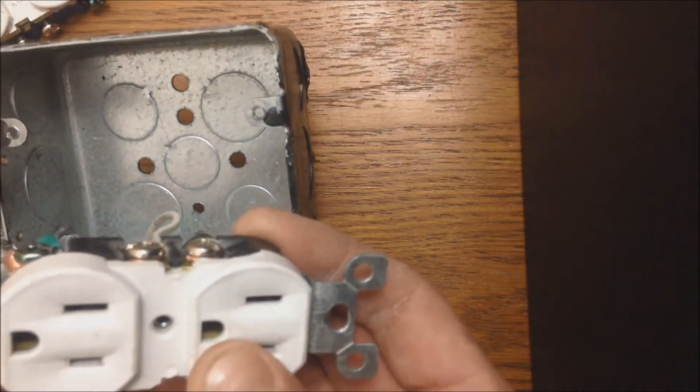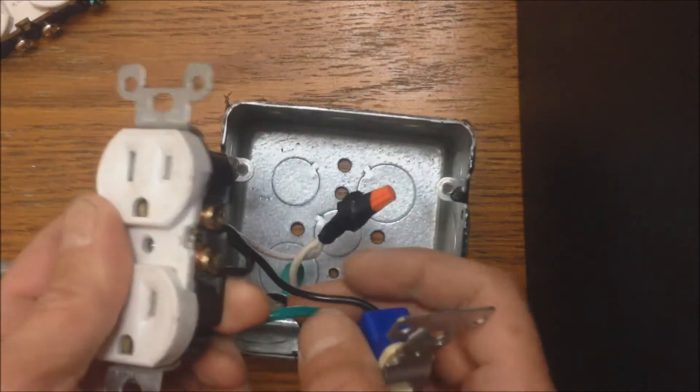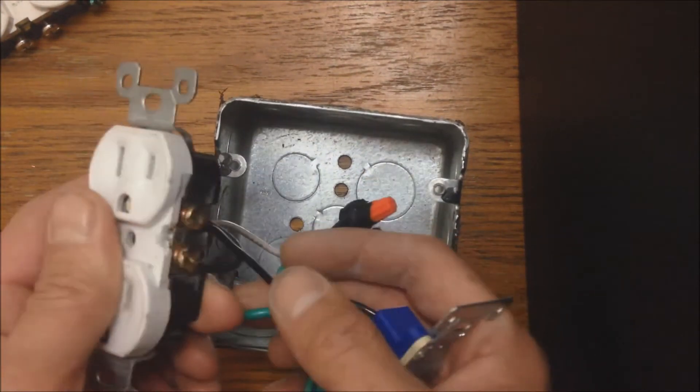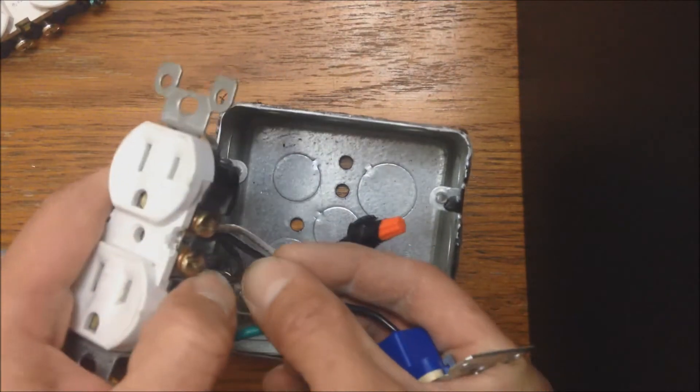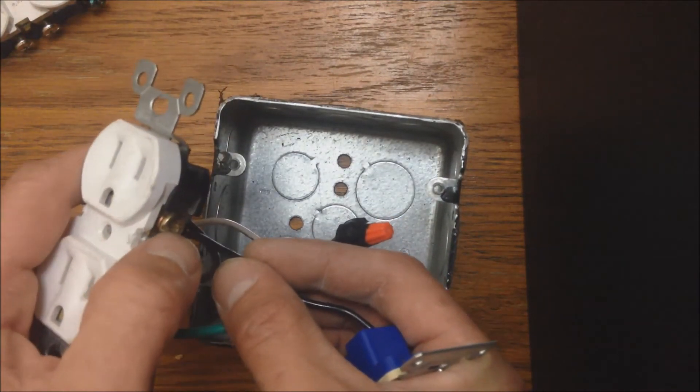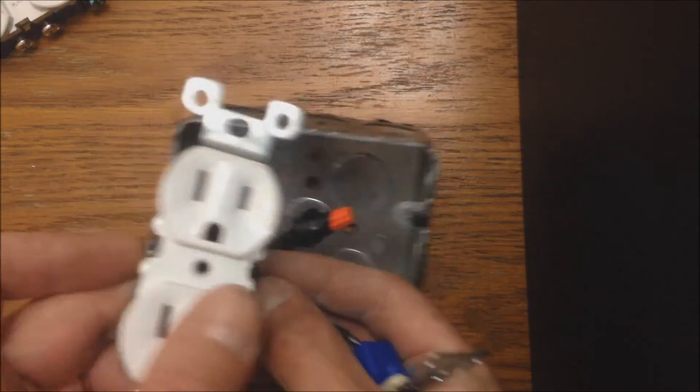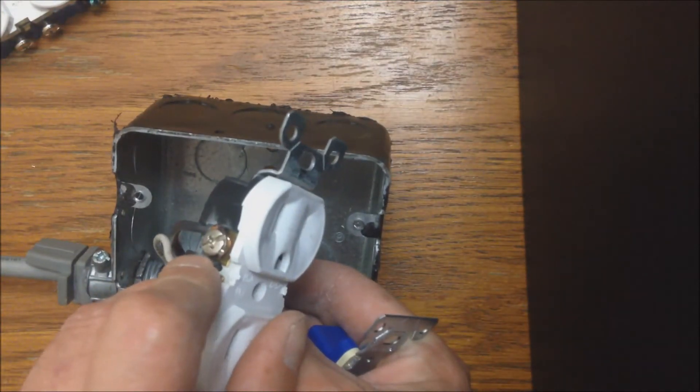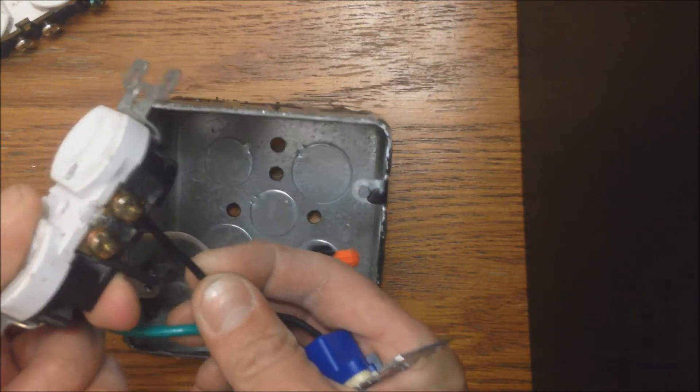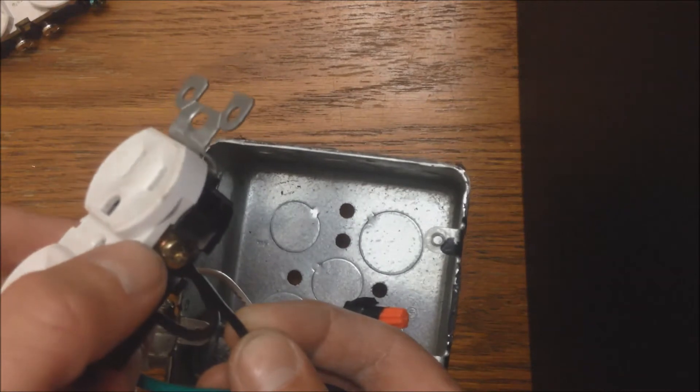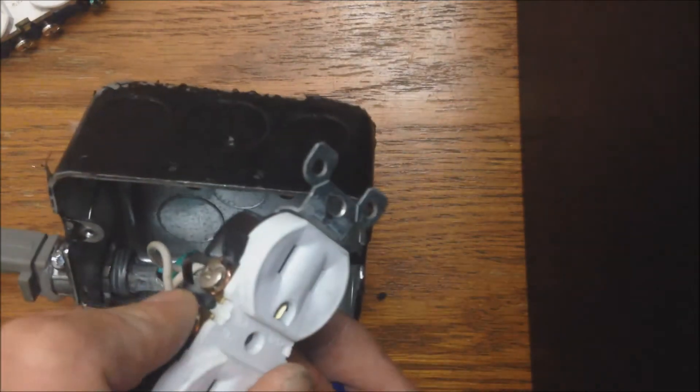We've separated the two and the way we have it set up is power comes out of the switch and goes to the hot. Brass screws are always the hot, silver screws are always your neutral. So power comes in the top of the outlet and then exits over here.